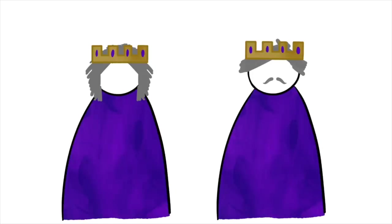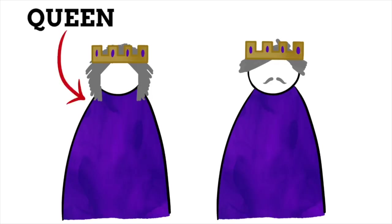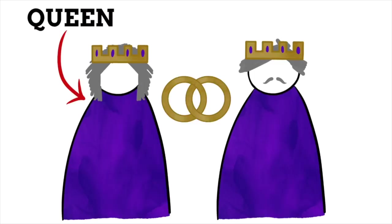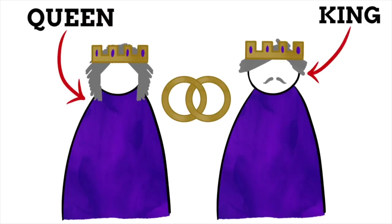Here we have two people — one is a woman and one is a man — both wearing crowns and looking all-important. What would you name them? Many people go straight to calling the woman a queen, and presume the man in the crown next to her is her husband. So what name would you give to a queen's husband? Most people conclude he would be called king — it's pretty obvious, right?